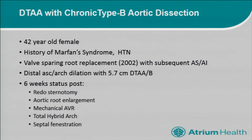In order to address that, we didn't have an option — there was nothing to sew to in the arch — so we had to address the distal ascending and the arch first. Six weeks prior to this case, which I actually did on Monday of this week, she underwent redo sternotomy. We enlarged her aortic root, put in a mechanical aortic valve because she had completed her childbearing years, and then did a total hybrid arch and fenestrated the septum from the inside as far down as we could.